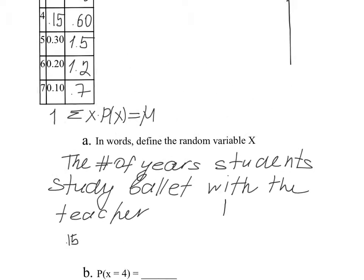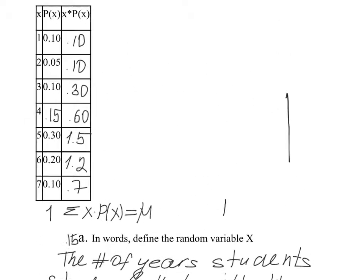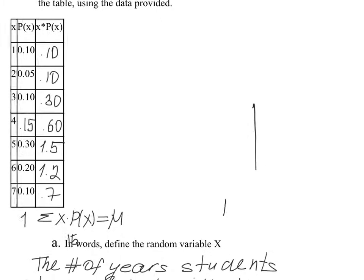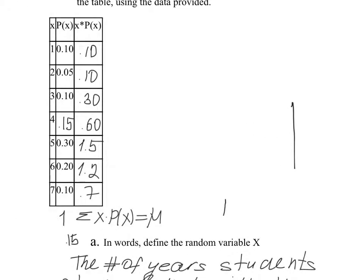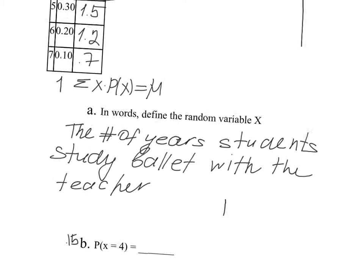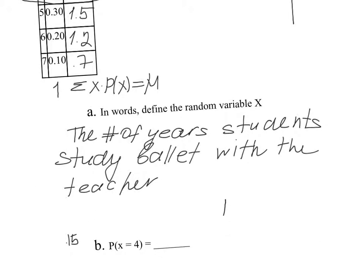Let's take a look at the next question. What is the probability of X equals 4? I need to go back to the table, and here it is, the one we found before, so that would be 0.15.